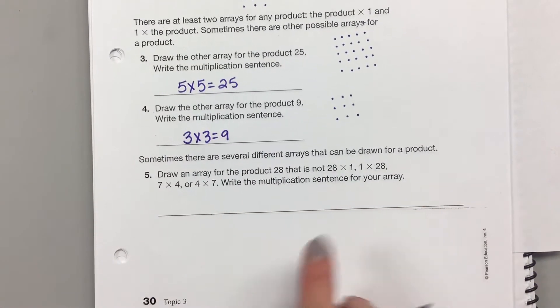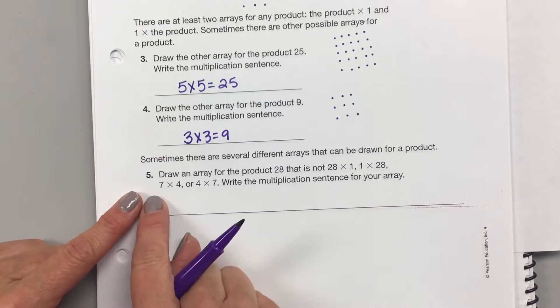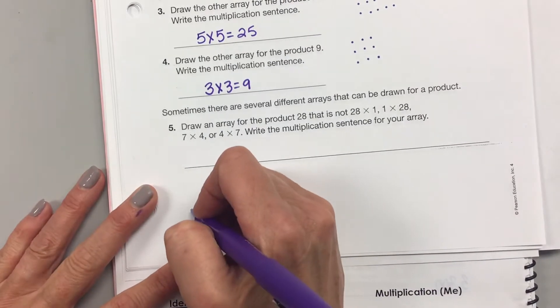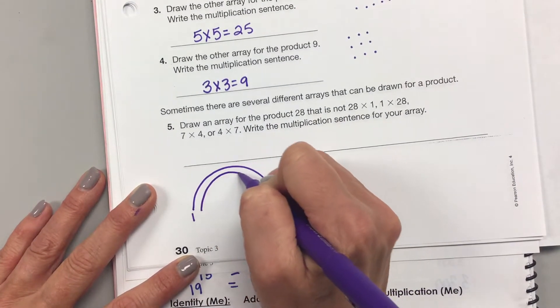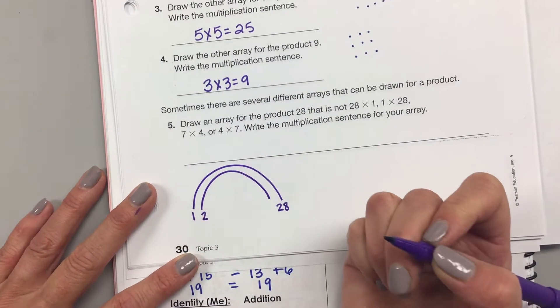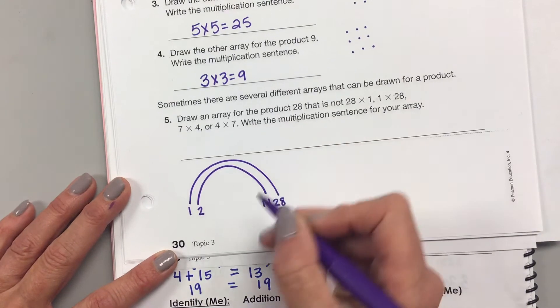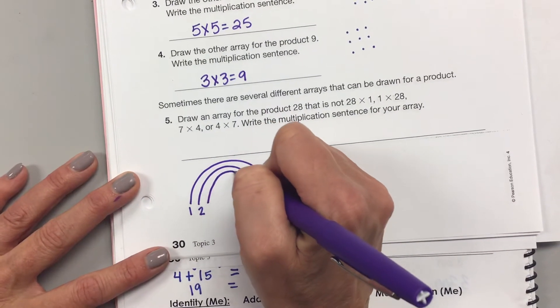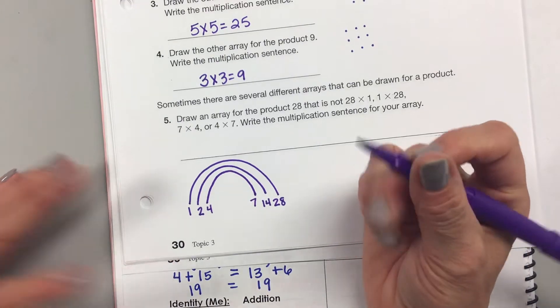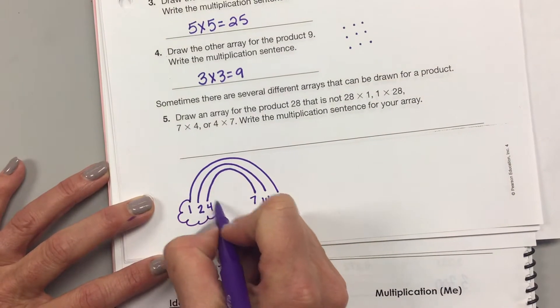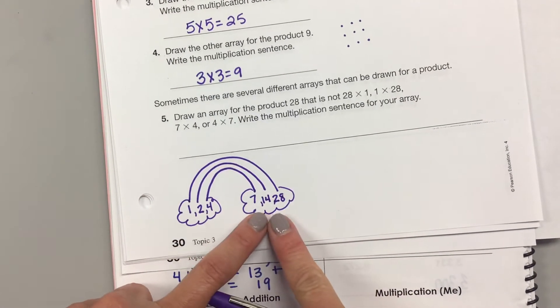All right, sometimes there are several different arrays that can be drawn for a product. Draw an array for the product 28 that is not 28 times 1, 1 times 28, 7 times 4, or 4 times 7. So let's just do our factor rainbow. So the first one would be 1 times 28. That's an even number, so it's 2 times what? 2 times what is 28? Fourteen. 3 times nothing. 4 times 7. 5 times nothing. 6 times nothing. So these are your 6 factors, your 3 factor pairs, or your 6 factors for 28: 1, 2, 4, 7, 14, and 28.